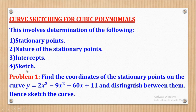We shall start with Problem 1. Problem 1 says: find the coordinates of the stationary points of the curve y = 2x³ − 9x² − 60x + 11, and distinguish between them. Hence, sketch the curve.